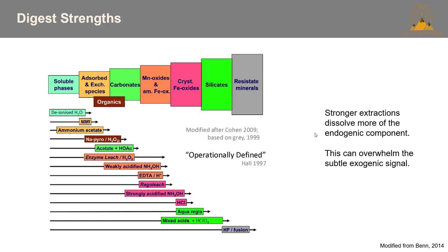How does the endogenic or exogenic signal translate into which digest you'll use? A stronger extraction will dissolve more of the endogenic component, but this in turn can overwhelm the subtle exogenic component. If you need to digest everything — for instance, you're interested in refractory minerals or doing a lithogeochemical study — you'll want to use at least a 4-acid, if not a fusion.